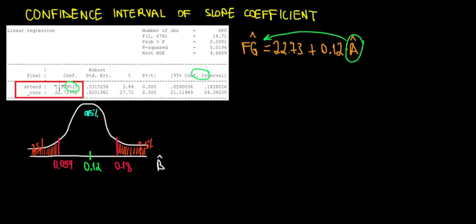So recall this. The 0.12 is the beta hat. It is the slope coefficient in this specific sample. This is not necessarily equal to the effect of the class attendance on final grade in the population. This is not the population slope coefficient. So this is just an estimate.